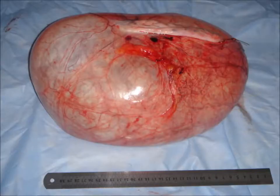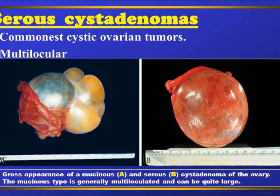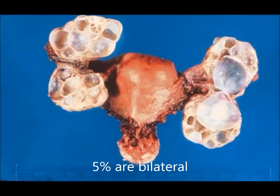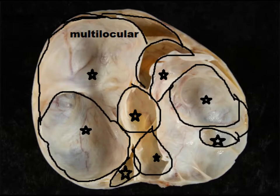You can appreciate the smooth outer glistening surface. There is a stretched fallopian tube. Another tumor which is huge in size — you can appreciate multilocular small cysts inside the larger cysts. Serous cysts are usually unilocular and mucinous are multilocular. About 5% are present bilaterally. You can appreciate the cystic spaces where the largest cyst is divided into smaller cysts, and you can see the outline of each cyst.